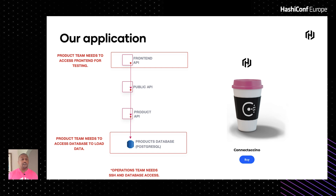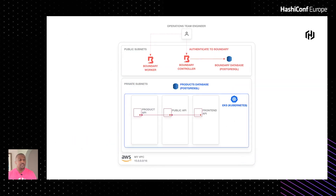Boundary sits in our public subnet and has two key components. The boundary controller is the brain — you make API calls to it, authenticate with it, and request sessions from it. The boundary worker handles the actual traffic and connectivity to targets, and can be scaled to handle load. The system writes its operational data to a Postgres database in the public subnet.